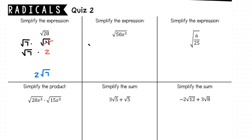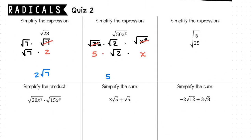In the second item, we have the square root of 50x squared. Let's go ahead and write the square root of 50 as the square root of 25 times the square root of 2, all multiplied by the square root of x squared. Since 25 is a perfect square, and x squared is also a perfect square, we can rewrite this as 5 times x times the square root of 2, in standard form.